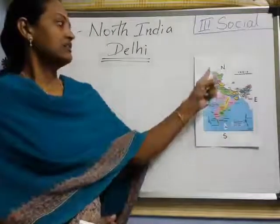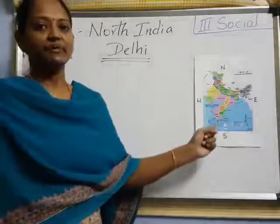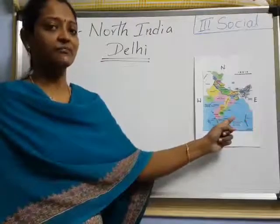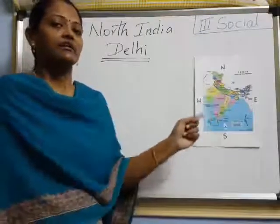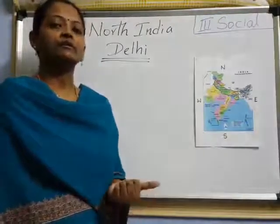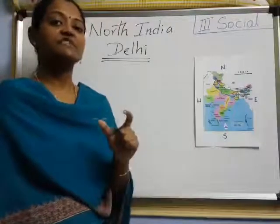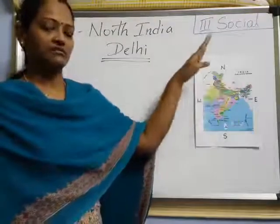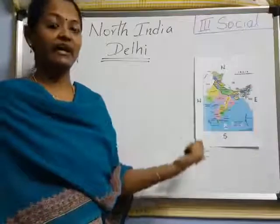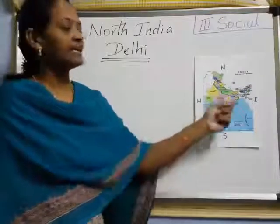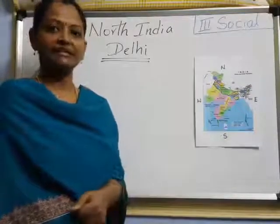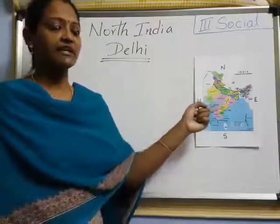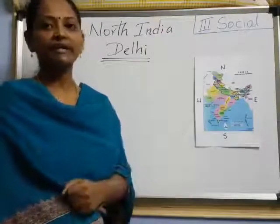Here in this India map, we have 4 sides: North, South, West, and East. From now onwards, we are going to learn about each side and one specific city. Today we are going to learn about the North side's important city. Like that, we have West side, South side, and East side also in the coming lessons. Today only about Delhi — it lies towards the northern part of India.